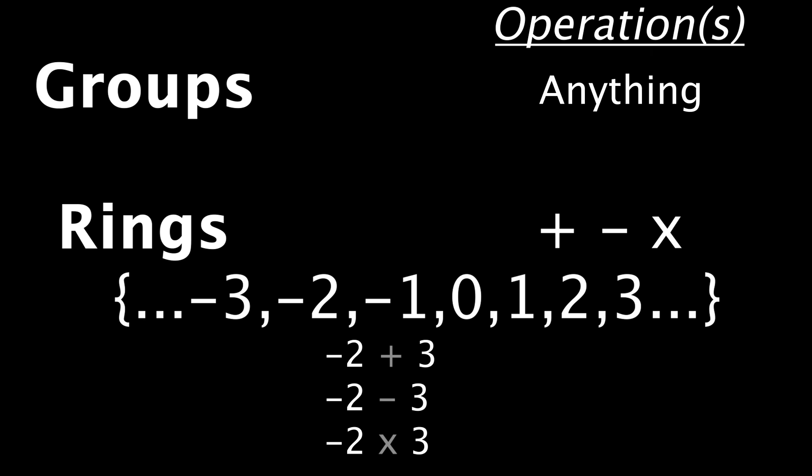Rings are just a little stricter. They are also sets, but the operations must be addition, subtraction, and multiplication. It can't be just anything now. So the set of integers is a ring as well. I can take any two elements, apply those three operations, and get another integer.